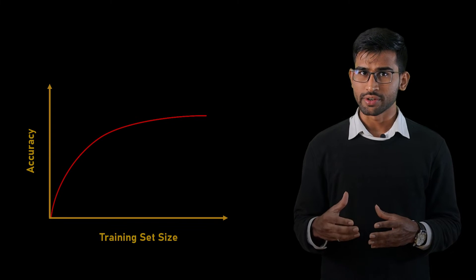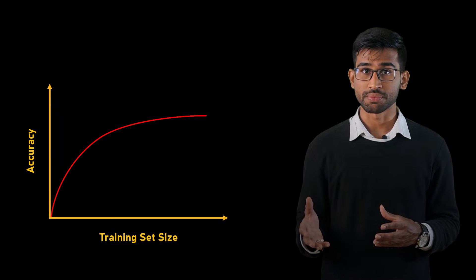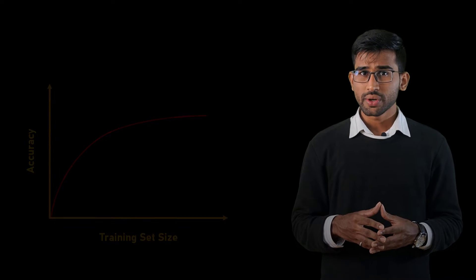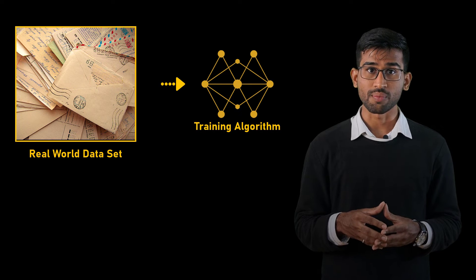Since we expect the algorithm to learn from the data, the larger and more varied data we feed it in, the more accurately relationships can be defined between the data labels. Usually, the datasets can be gathered from real world examples. For instance, in our mail letter example, we could collect a large number of different handwritten pin codes, thus providing a large diverse set of inputs for a model to learn from.